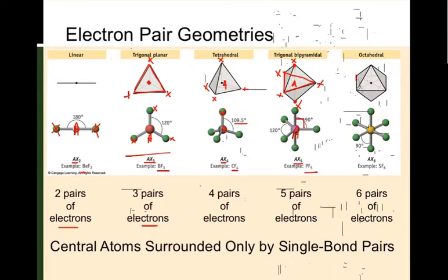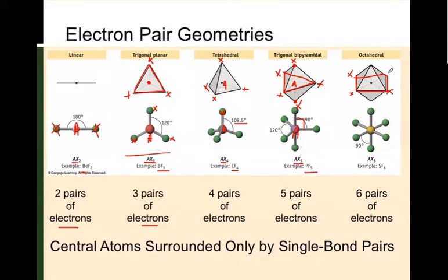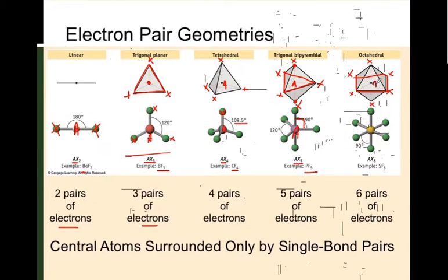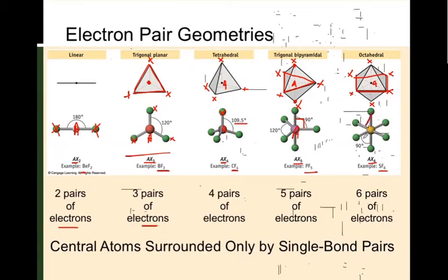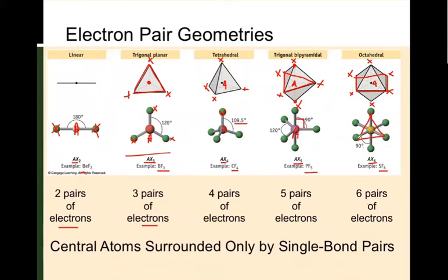The last geometry is octahedral, which has six electron domains. It consists of a square plane with X atoms on each corner, plus one atom above and one below, with A in the middle. The general formula is AX6, and an example is SF6. It's called octahedral because it forms an octahedron when you look at all the faces of the structure — four faces on the sides plus four from the top and bottom, giving eight faces total.